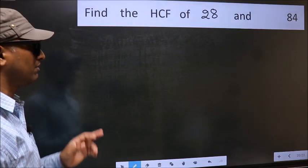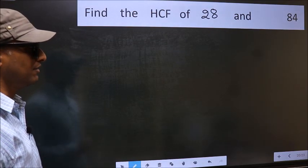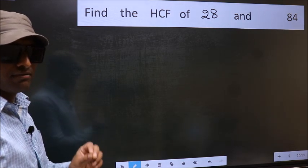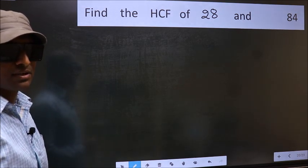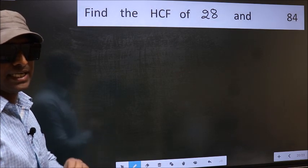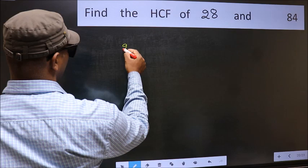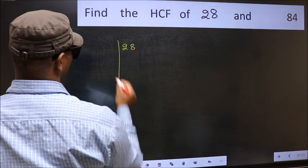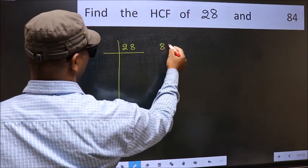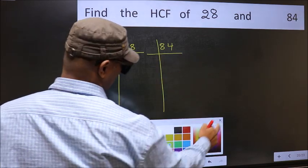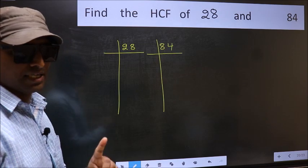Find the HCF of 28 and 84. To find the HCF, we should do the prime factorization of each number separately. What I mean is 28 and 84. This is your step 1.